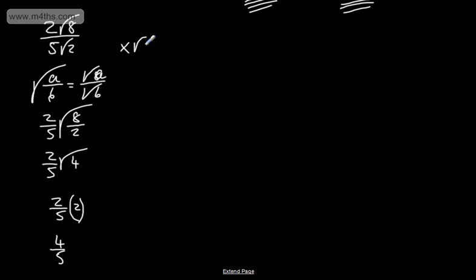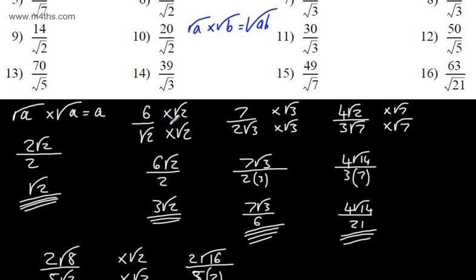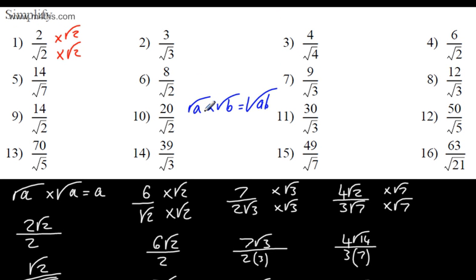If you spot the shortcut, great — if not, just use the standard method. For some quick examples: 39 root 3 over 3 simplifies to 13 root 3, and 70 root 5 over 5 simplifies to 14 root 5. All we're doing is multiplying the numerator and denominator by the surd value to clear the irrational number from the denominator.